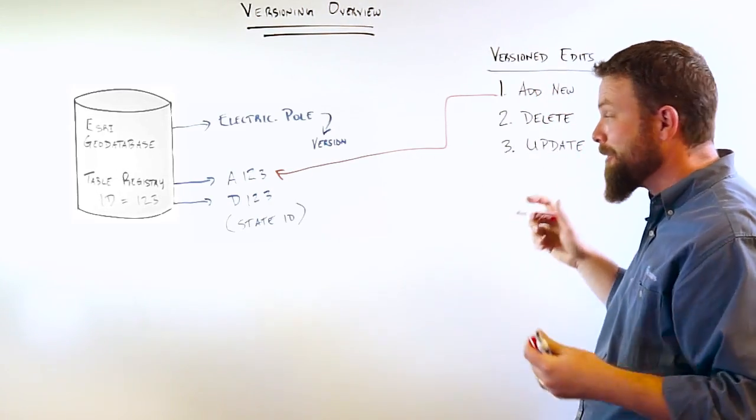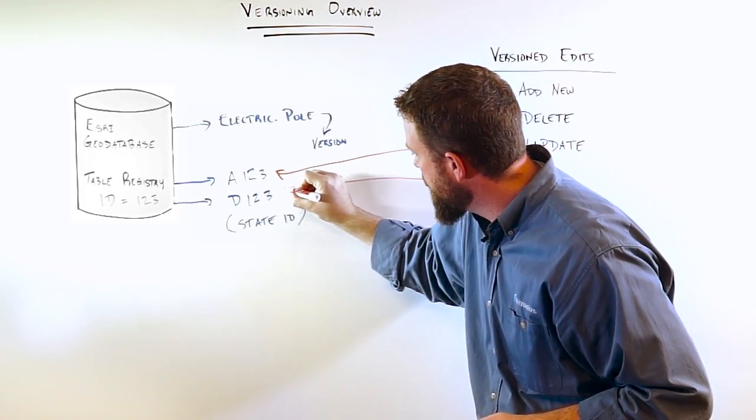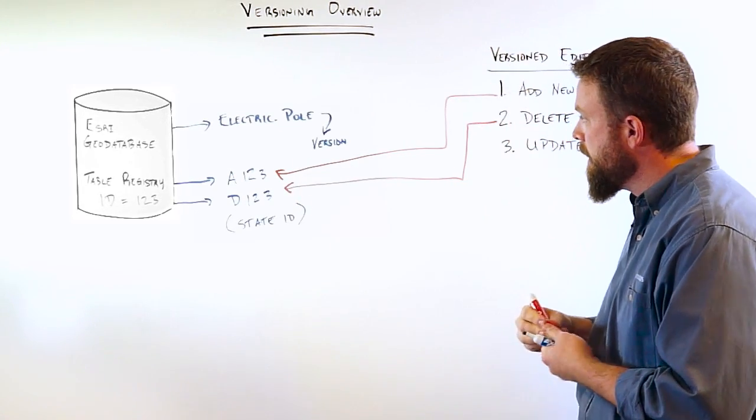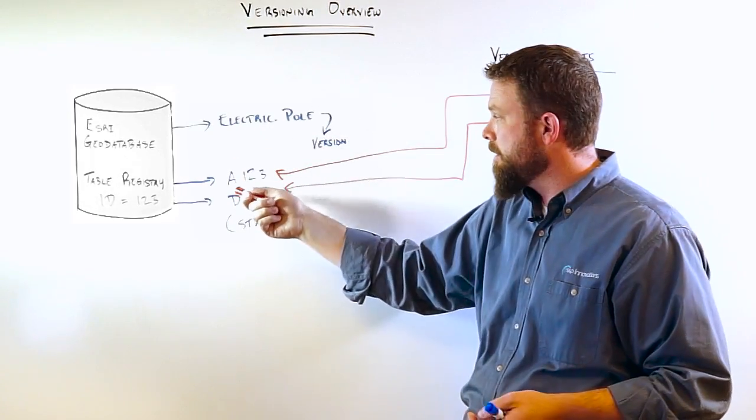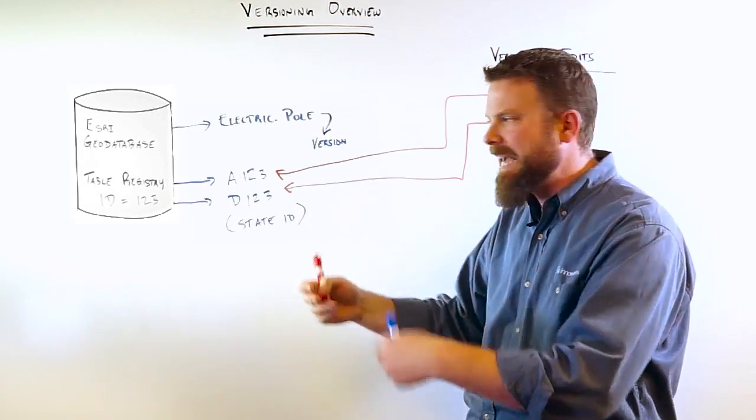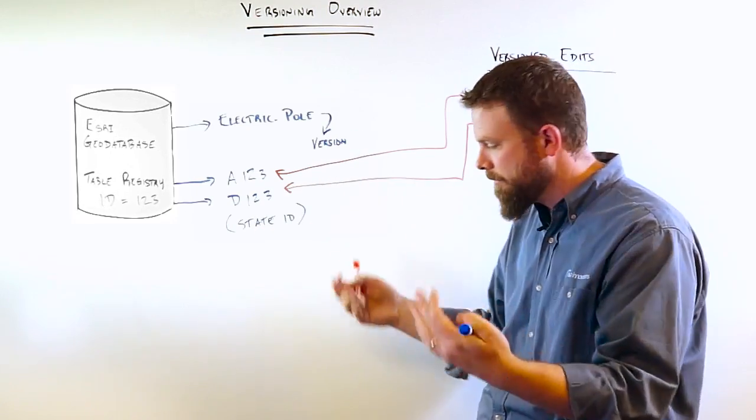Now, a delete, you can imagine, goes pretty much the same way. So, the delete number two comes down here to the D table. This allows us with an existing record. You imagine we have a pole that maybe already existed up here. The D says, okay, we've deleted that record. Now, both of these, as they're entered, are capturing state IDs within the versioning tree.